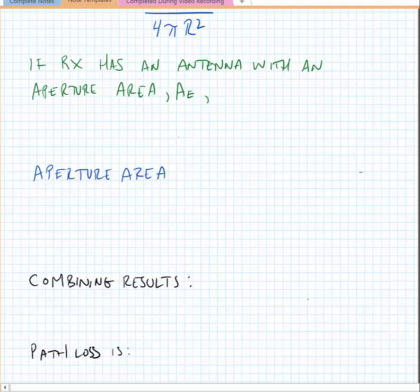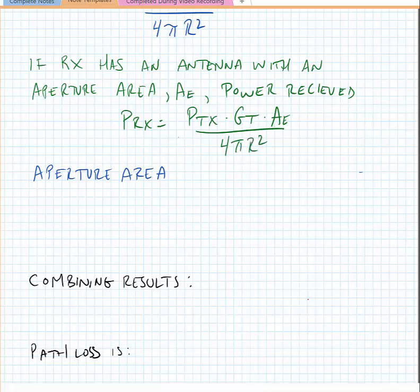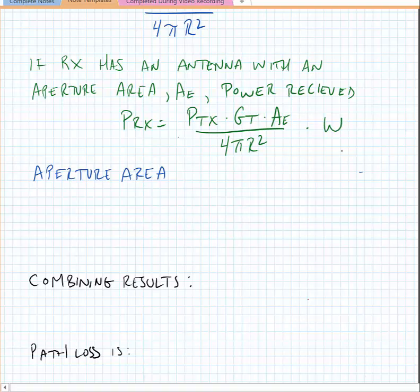If the receiver has an antenna with an aperture area A_e, then the power received, P_rx, is the power density multiplied by that aperture area. This power received is in watts, as the aperture area picks up the power within a given unit area of the transmitted waveform at the antenna.